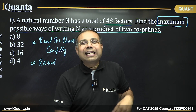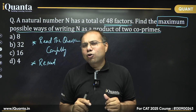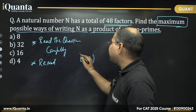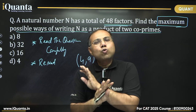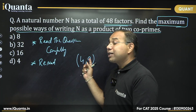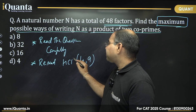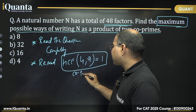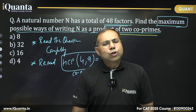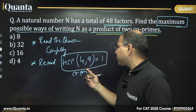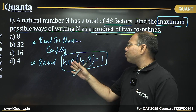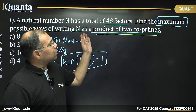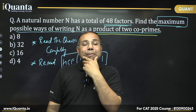First you need to understand what co-primes are. Two numbers which do not have anything in common — other than 1 — are called co-primes. For example, 4 and 9 are co-prime numbers; they have no highest common factor greater than 1. Whenever two numbers have an HCF of 1, they are called co-prime numbers. So co-prime numbers do not have any common factor greater than 1, or their HCF is always 1.